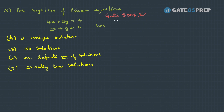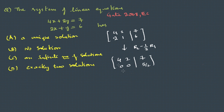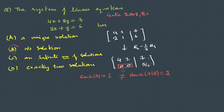Here we have another question from GATE 2008. The system 4x + 2y = 7 and 2x + y = 6 — options are unique solution, no solution, infinitely many solutions, or exactly two solutions. Using Gauss-Jordan elimination, we write the augmented matrix and perform row transformations. After the transformations, one row of the coefficient matrix becomes zero, giving rank one, but the augmented matrix still has two non-zero rows, giving rank two. Since these are not equal, the system has no solution — it is inconsistent.